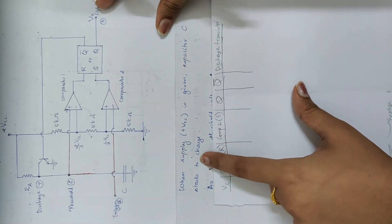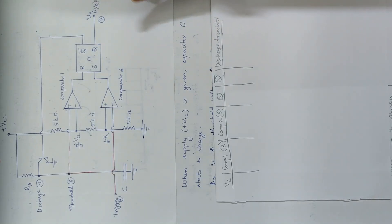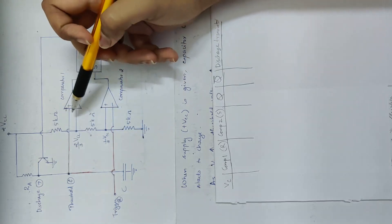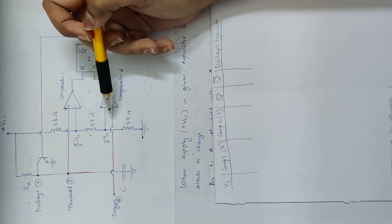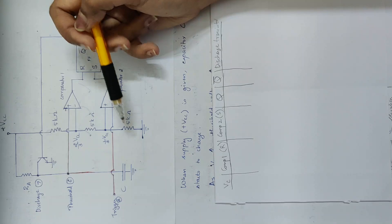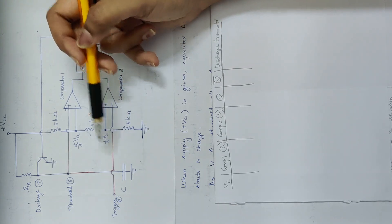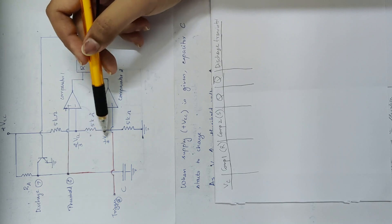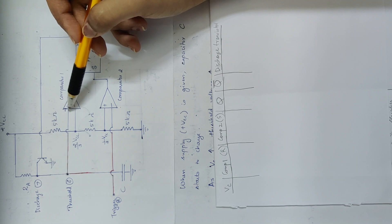The capacitor C starts to charge and the capacitor voltage increases. Initially, the capacitor voltage is less than 2/3 Vcc. We need to increase the capacitor voltage. Comparator 1 references 2/3 Vcc.